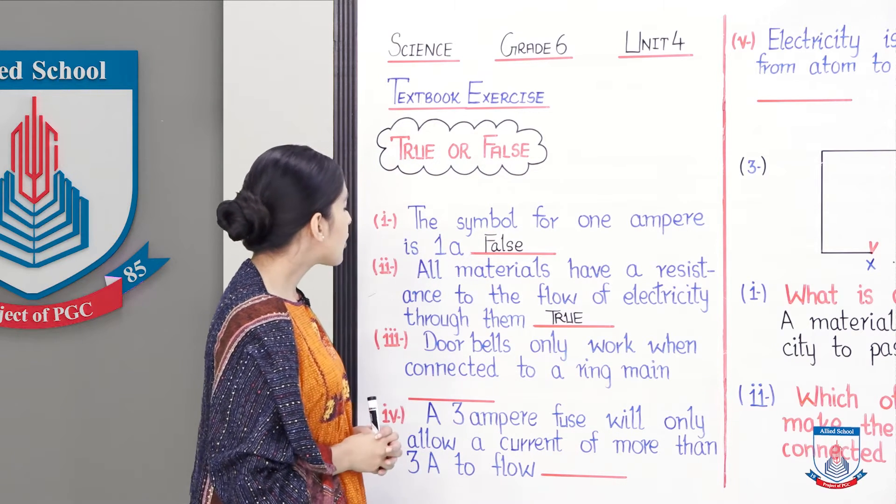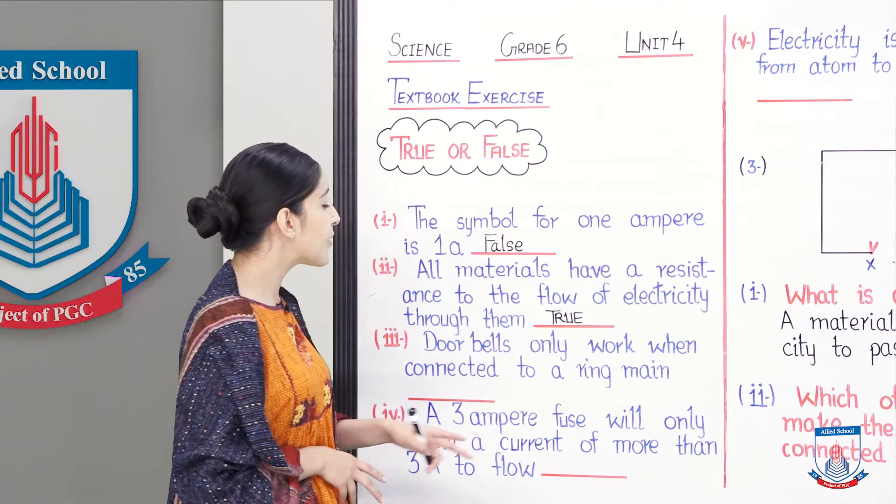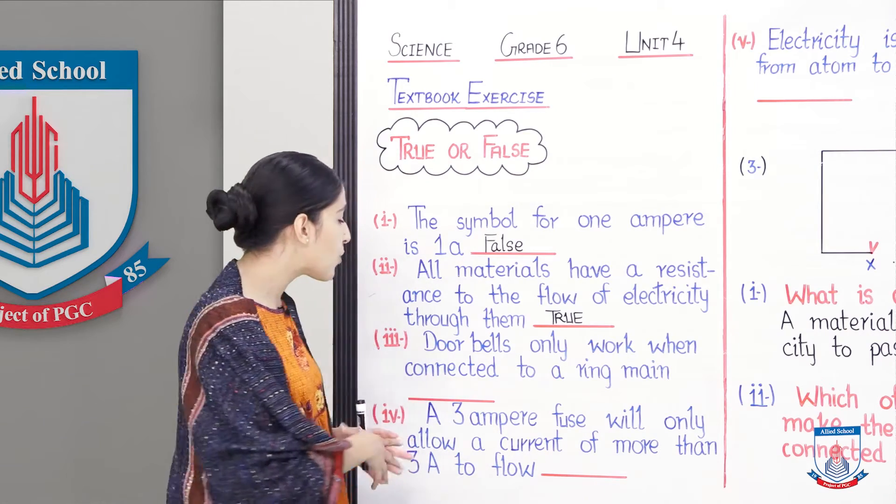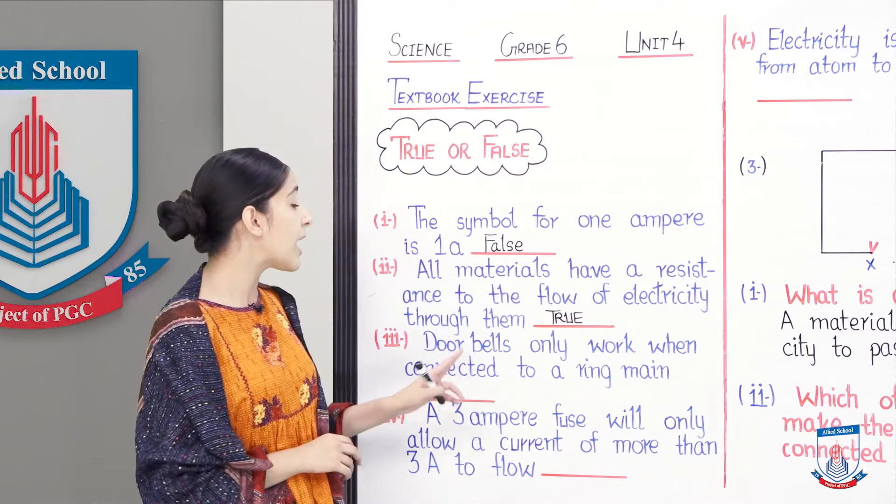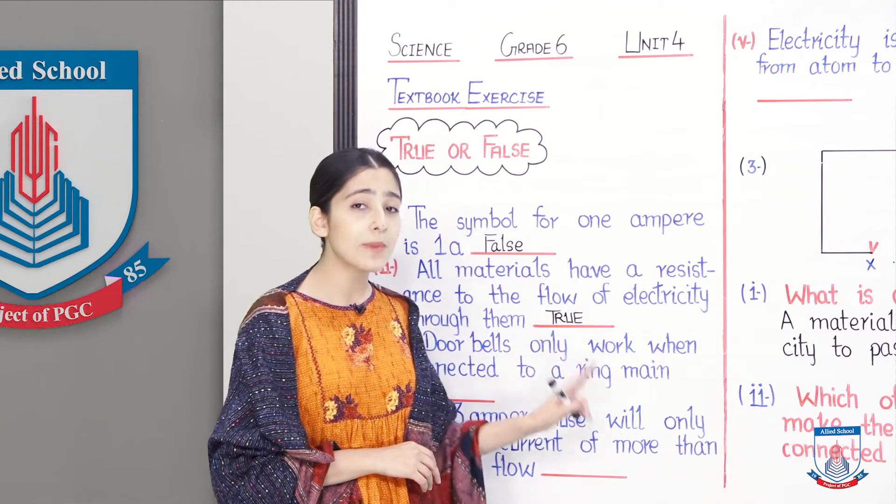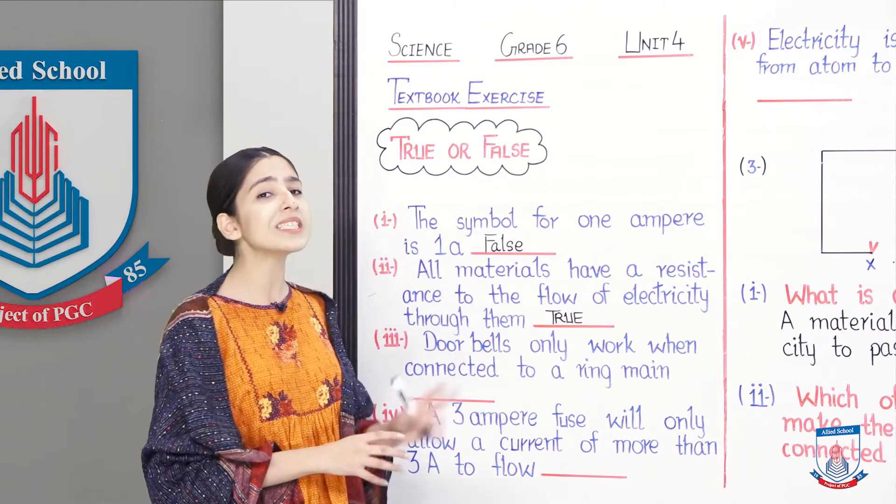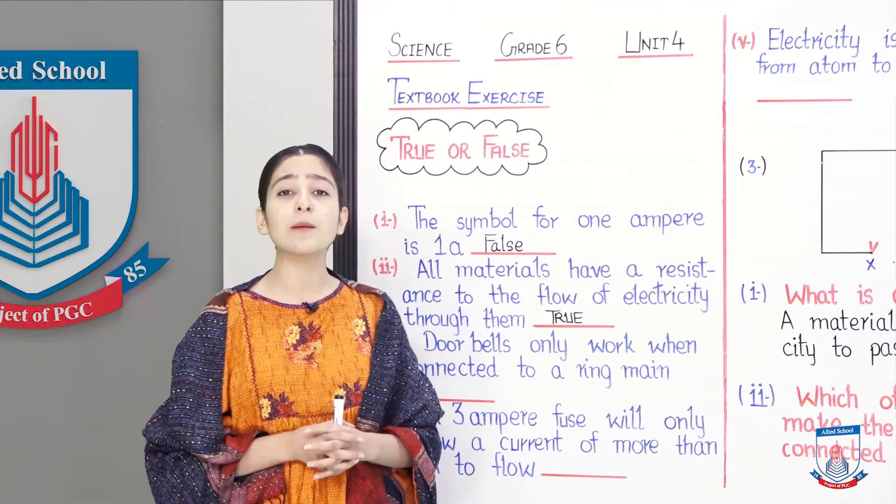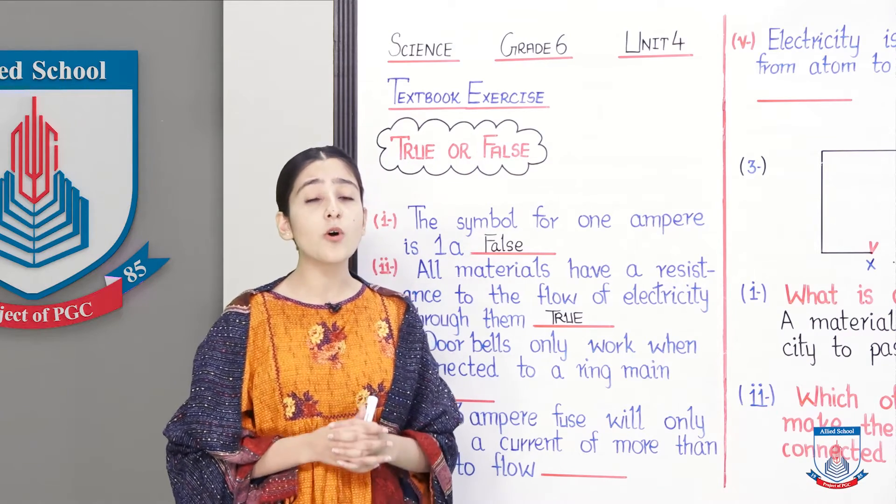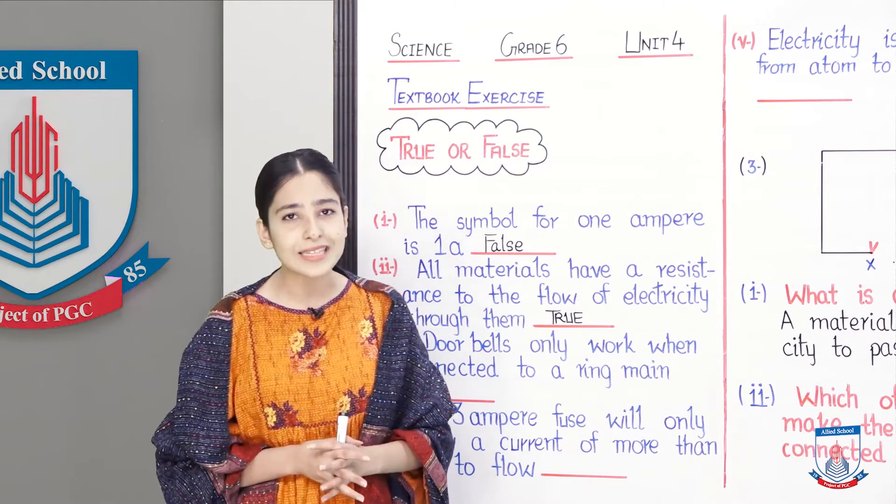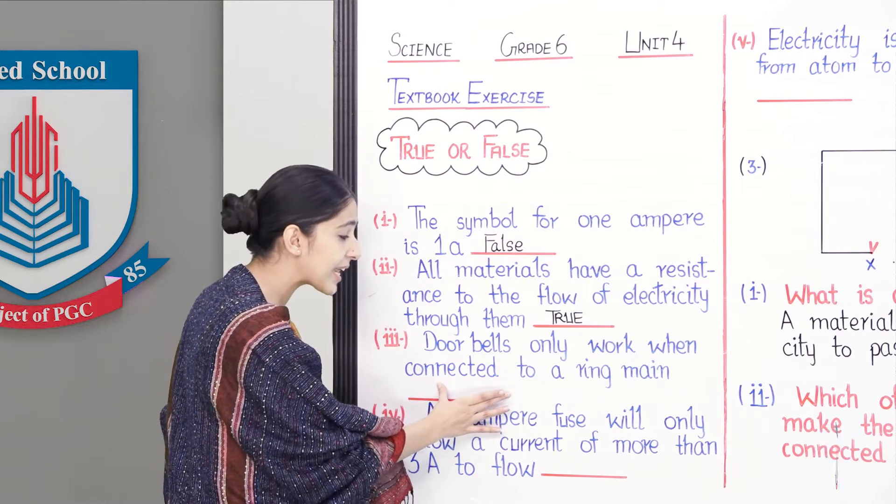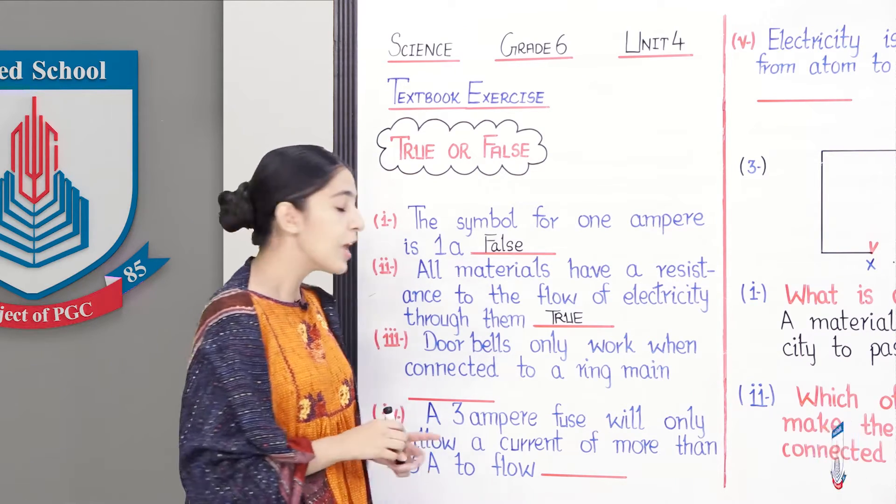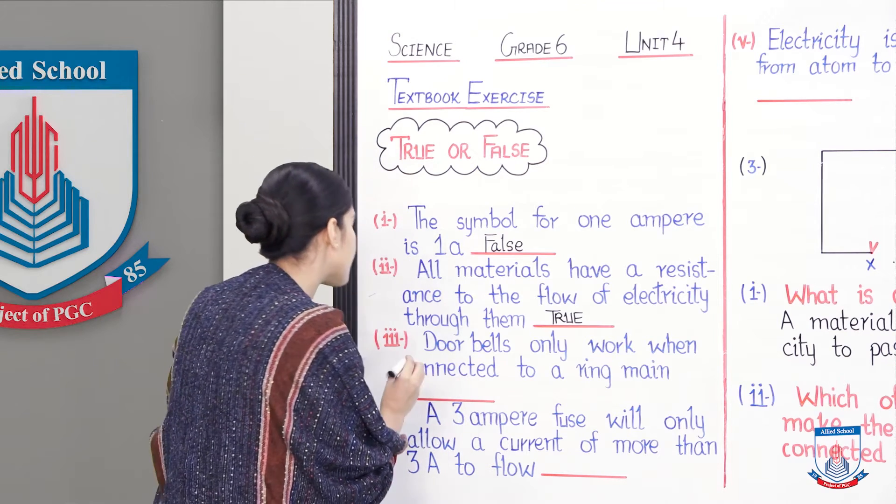Then we have statement number three. Doorbells only work when connected to a ring main. Yahaan peh likha hai ki jo humari doorbells hain, woh sirf tabhi kaam karengi agar hum unko connect karein to the ring main. Ye statement hogi humari galat. Woh isi liye kyunke doorbells ko agar hum kisi chote se circuit mein bhi laga den, toh woh kaam kar leti hai. Balki ab hamare paas modern era mein wireless doorbells bhi aa chuki hain. So we will write false as an answer to statement number three.